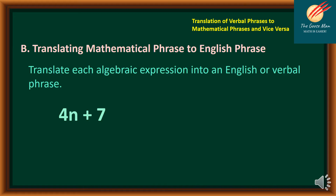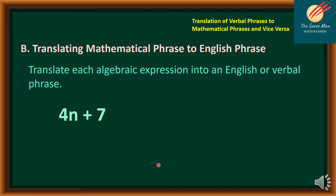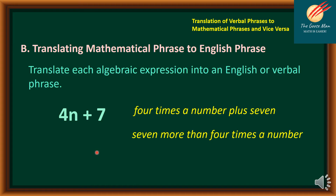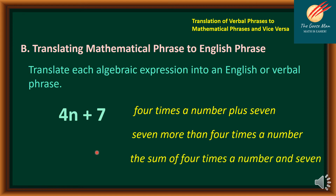A while ago, we translated English phrases to mathematical phrases. This time, we will translate mathematical phrases to English phrases. For example, translate 4N plus 7 into an English or verbal phrase. This is 4 times a number, plus 7. Ways to translate: "4 times a number plus 7," another way using translating backwards is "7 more than 4 times a number," and another is "the sum of 4 times a number and 7."